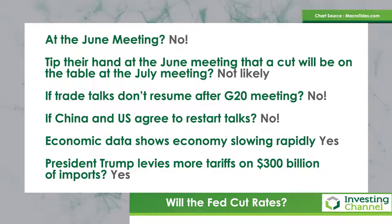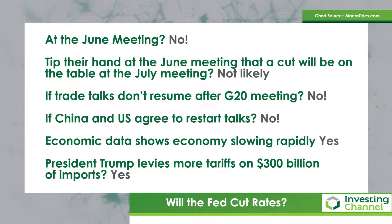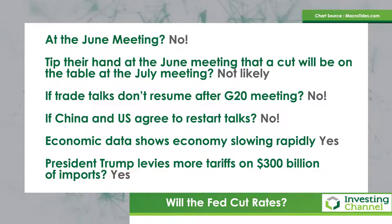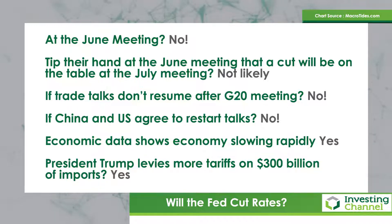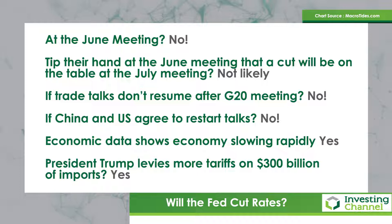If the trade talks don't resume after the June 28th G20 meeting, will the Fed automatically lower rates in July? No — I think the Fed is going to need to see economic data indicate that the U.S. economy is slowing more rapidly than expected. Given job gains, employment growth, wage growth, and the service sector ISM number that came out today looking really pretty healthy, I don't think the odds are that the economy will slow enough by the July meeting for the Fed to respond. And of course, if China and the U.S. agree to start talks again, the Fed isn't going to obviously act. I think this is one of the factors why the Fed wants to wait to see how this evolves.